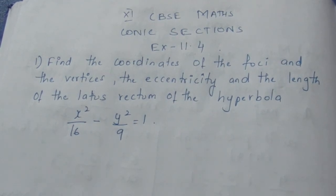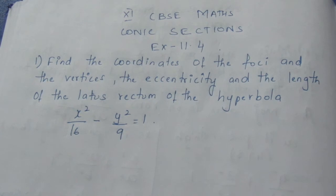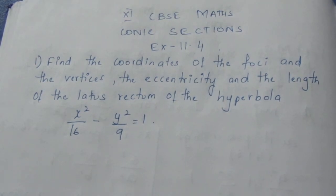Let us see the question. Find the coordinates of the foci, the vertices, the eccentricity, and the length of the latus rectum of the hyperbola x²/16 - y²/9 = 1.